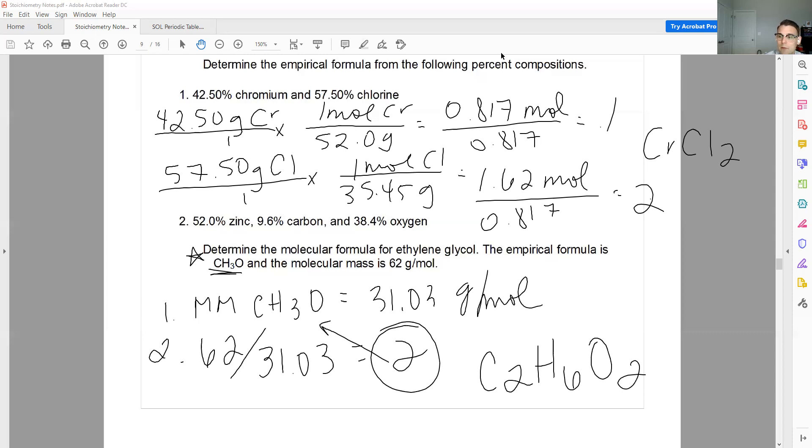Here's a good way to tell if it's an empirical formula or a molecular formula. Empirical formula cannot be reduced. CrCl2, I can't reduce that down. Molecular formulas reduce down to your empirical formula. So if you can reduce something, that is a molecular formula. If you cannot reduce it, it is an empirical formula. Sometimes the two are the same, but not always.